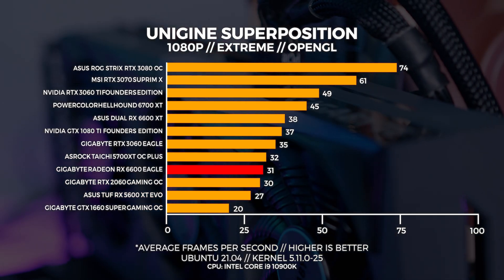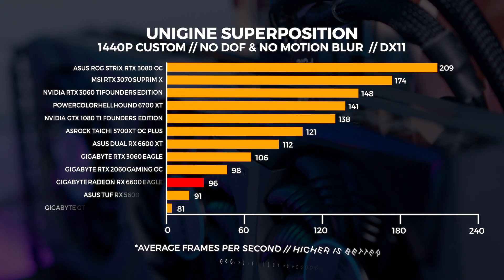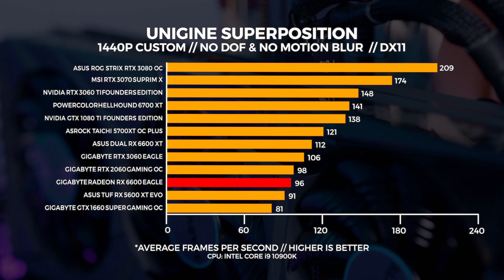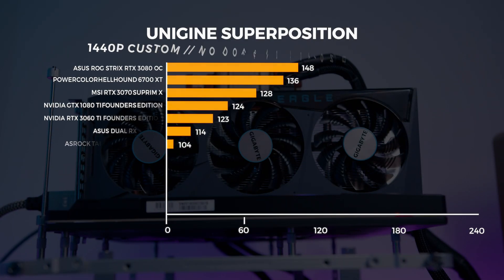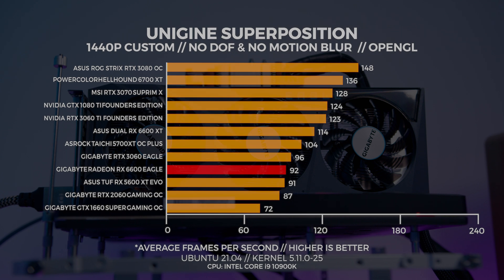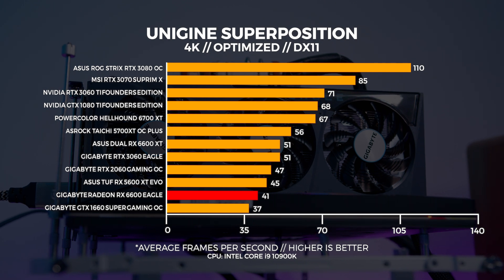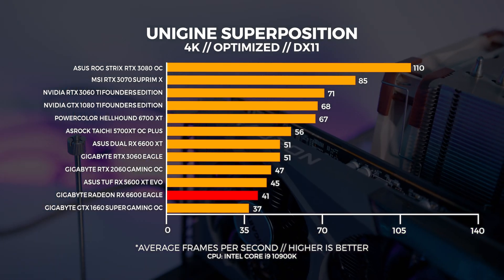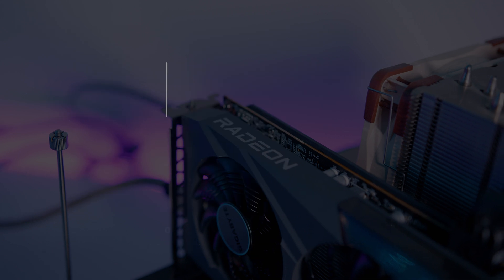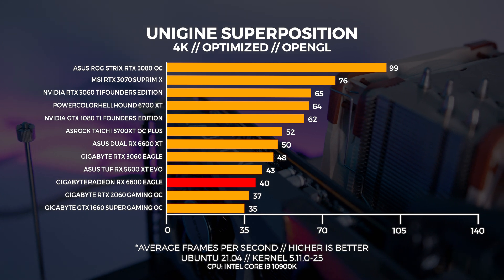The 3060 is less relevant with this benchmark. At 1440p in Windows the 6600 comes in behind the 2060 by a single frame and is considerably slower than the 6600 XT. In Linux at 1440p we're seeing the inverse, with the 6600 beating out the 2060. At 4K in Windows the 6600 is coming in even behind the 5600 XT, which was not something I was expecting. I retested the 5600 XT and saw the same result again.